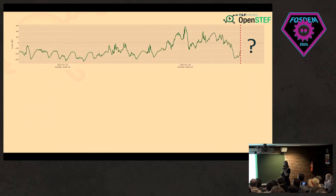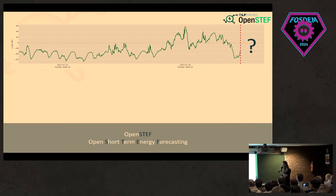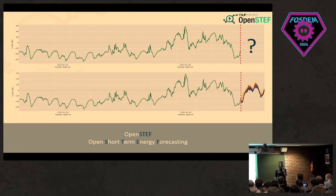I think we all know these kinds of graphs. This is energy consumption at some place in the Netherlands. However, we have no idea what's going to happen in the future. Well, this is where OpenSTEP comes in. OpenSTEP stands for Open Short Term Energy Forecast — so instead of our question mark, we actually know what's going to happen.